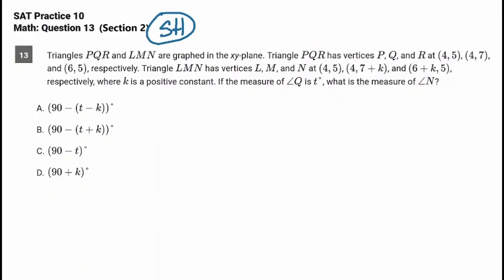Triangles PQR and LMN are graphed in the XY plane. Triangle PQR has vertices P, Q, and R at (4,5), (4,7), and (6,5), respectively. Triangle LMN has vertices L, M, and N at (4,5), (4, 7+K), and (6+K, 5), also respectively. K is a positive constant. The measure of angle Q is T degrees. What's the measure of angle N?